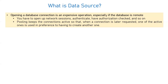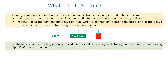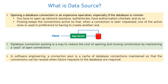Whenever your application needs a connection from the database, it will be picked from the active connections. It will not go through the same process again — going to the network, authenticating, and creating a new connection — because the pool contains a set of active connections. The application takes a connection from the pool and does the necessary processing. Database connection pooling is a way to reduce the cost of opening and closing connections by maintaining a pool of open connections.